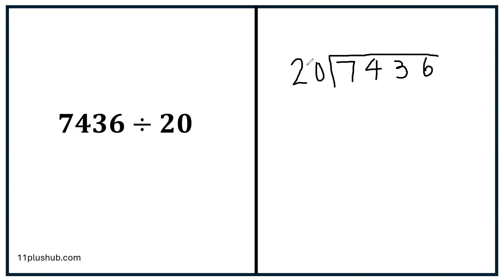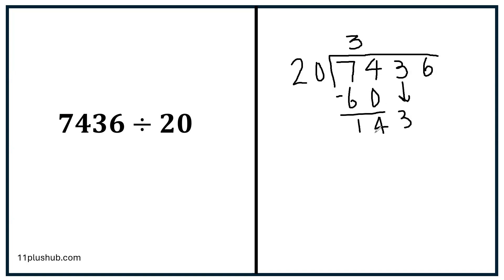Let's do the 20 times table: 20, 40, 60 — it goes 3 times, 20 times 3 is 60. So that number comes down here. And this turns into column subtraction: 4 subtract 0 is still 4, 7 subtract 6 is 1. The next number comes down. So now at the bottom we have 143. 20 into 143 — let's do the 20 times table: 20, 40, 60, 80, 100, 120, 140. It goes 7 times and 20 times 7 is 140. So 140 comes down here, turns into column subtraction.